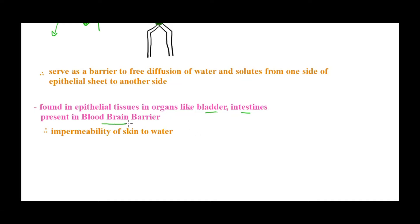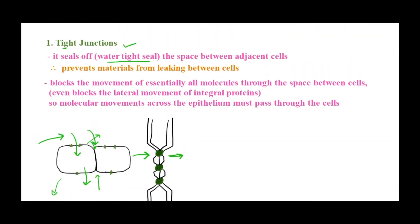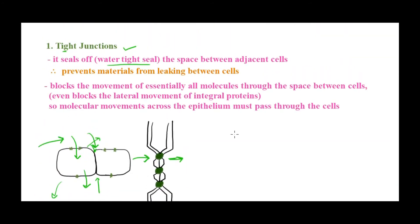Tight junctions are also present in the blood-brain barrier, which is very important — nothing can simply pass through it. We also know that our skin is not permeable to water; there is no space between the skin cells for water to simply pass through. This impermeability is because of tight junctions. Without them, we could easily get dehydrated, or standing in water we would absorb water into the body, which is of course not feasible.